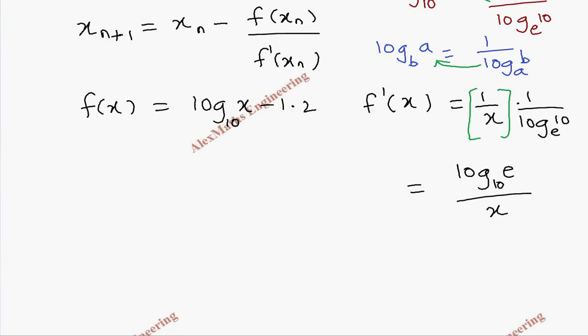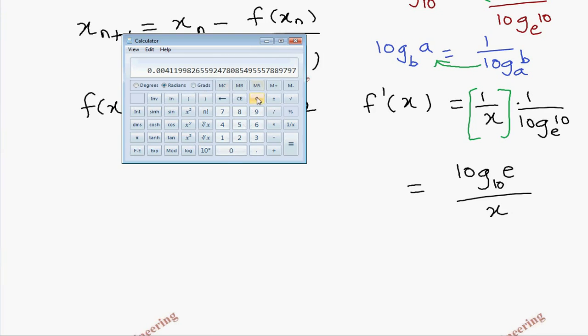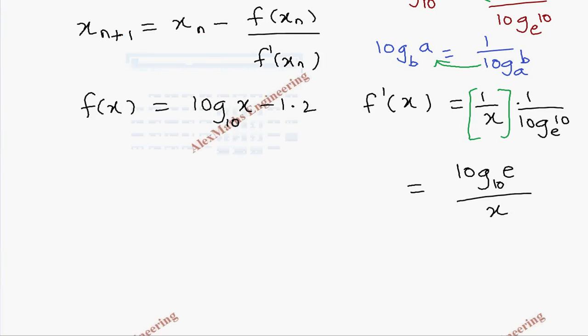And log e, this value using calculator, we can take the value of e. That is e power 1. This is the value of e. And we need log of this: 0.43429. So we shall round off to 0.434. So this is 0.434 by x.